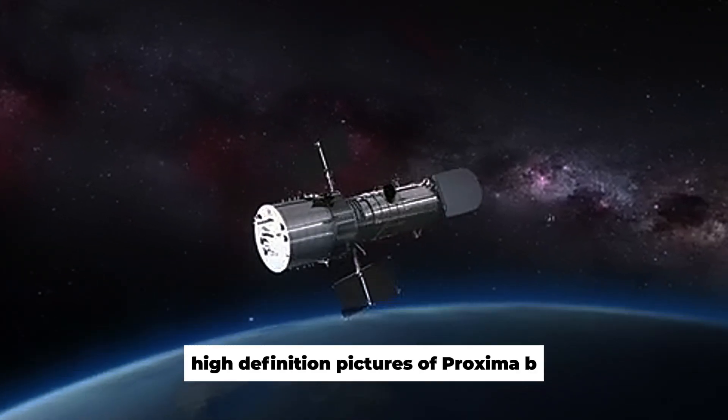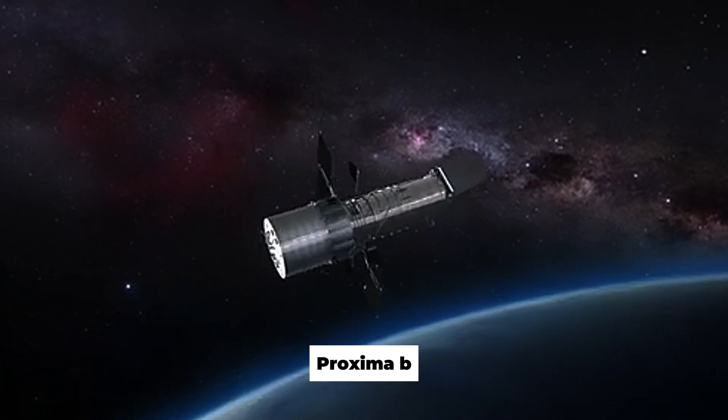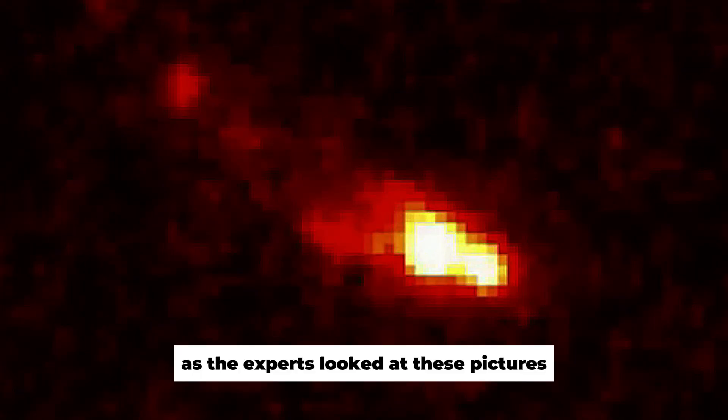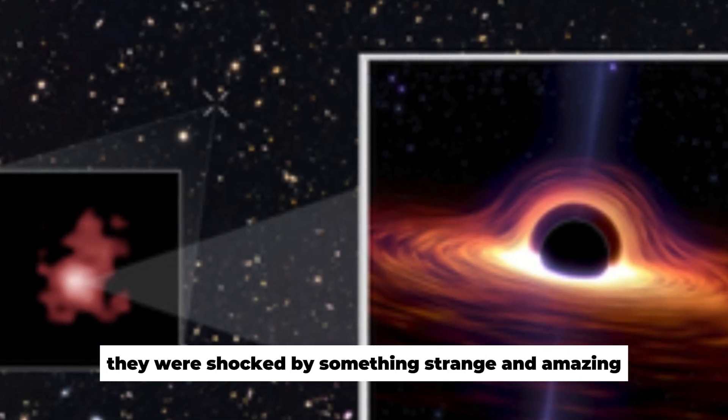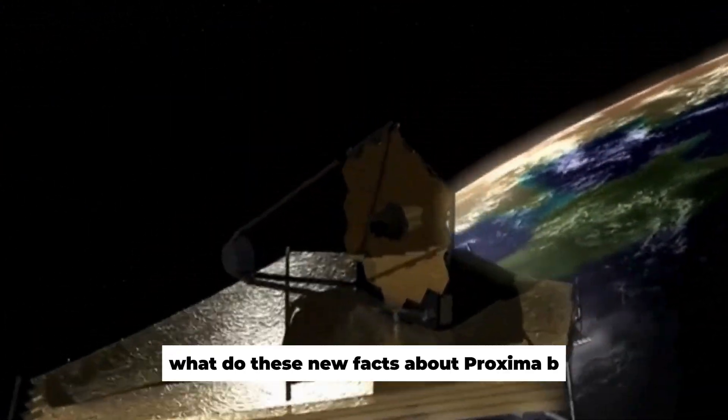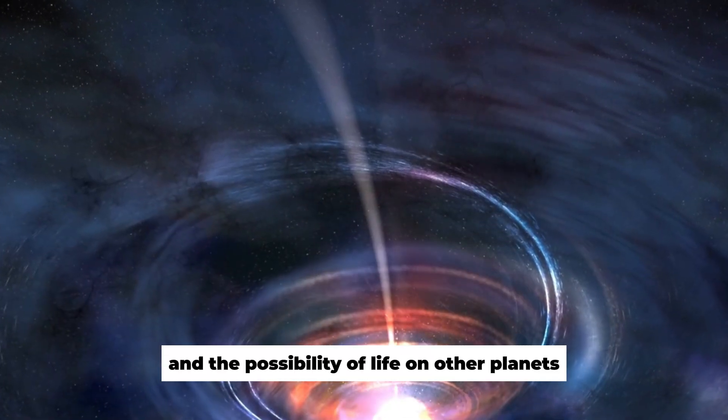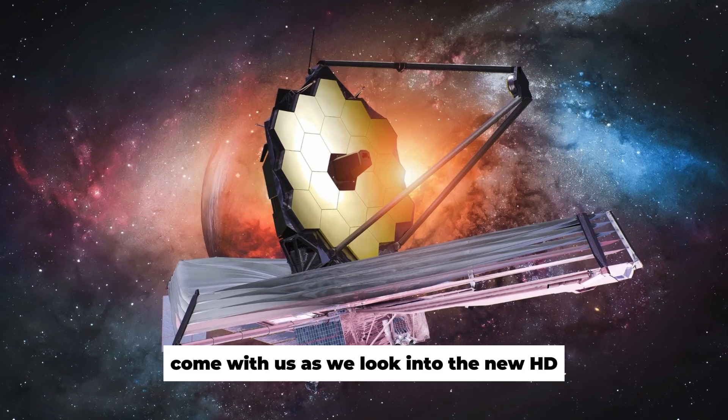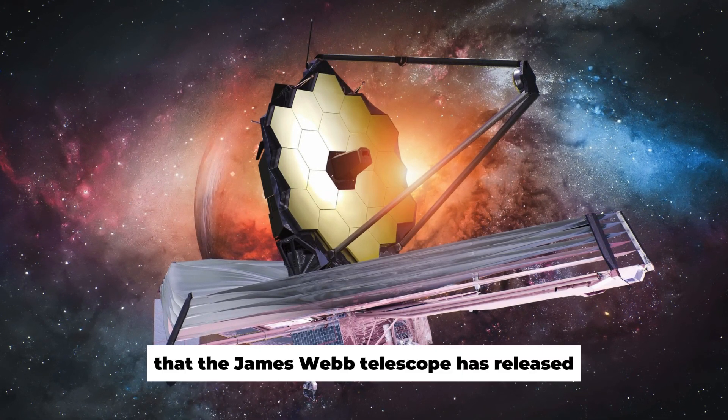New high-definition pictures of Proxima b were sent in by the James Webb Telescope. Proxima b is a world that scientists think might have life. As the experts looked at these pictures, they were shocked by something strange and amazing. What is hidden in these beautiful pictures? Come with us as we look into the new HD pictures of Proxima b that the James Webb Telescope has released.